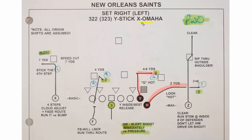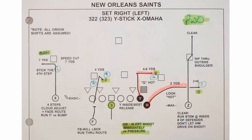The Omaha on the backside is an option route. In New Orleans we used pure progressions — P or P-W-O, progression with an option. That Omaha is just a quick out on the backside. If you come out and like the look — a picture look — you can throw that little quick out easily without even worrying about the stick. If not, come out and throw the stick. The stick is really a ball-possession kind of concept.